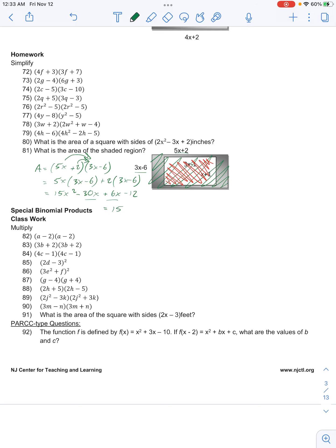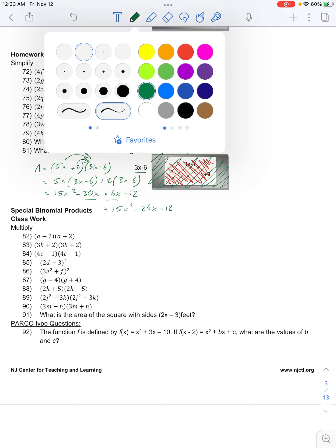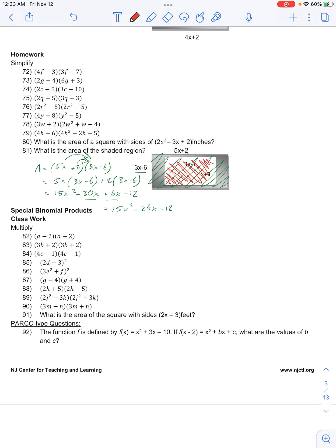Then combining these two like terms will give us 15x squared minus 24x minus 12. Then let's multiply out the other area.